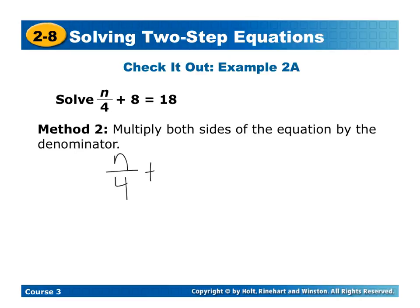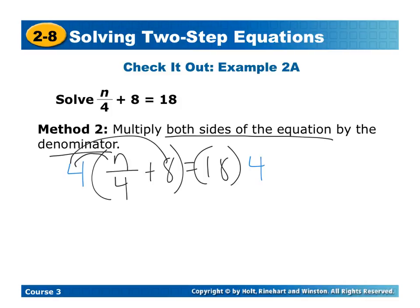When we look at n over 4 plus 8 is equal to 18, say instead of getting rid of the 8 first, you decide you want to get rid of the denominator of 4. So one thing we can do is multiply both sides of the equation by the denominator. So I'm going to multiply this side by the denominator, which is 4. I'm going to multiply the right side by the denominator, which is 4. Now here, remember that 4 gets distributed to both parts. The 4s still cancel out like they normally would, and you're left with n. And 4 times 8 gives us 32, because I distributed that 4 times the 8. I'm multiplying it by the entire side. Now I have to also multiply by 4 on the other side. So if I do 18 times 4, I get 72.